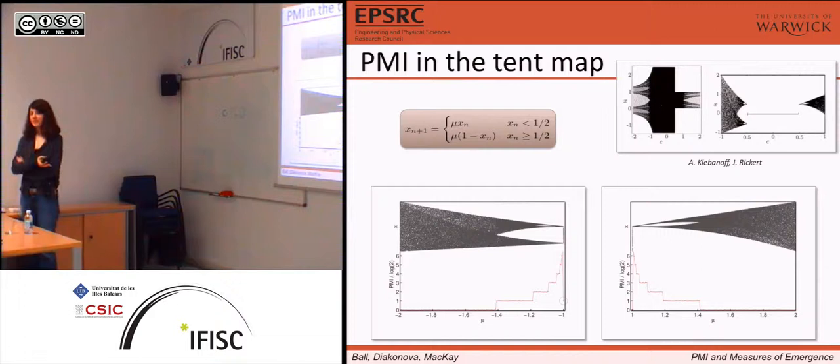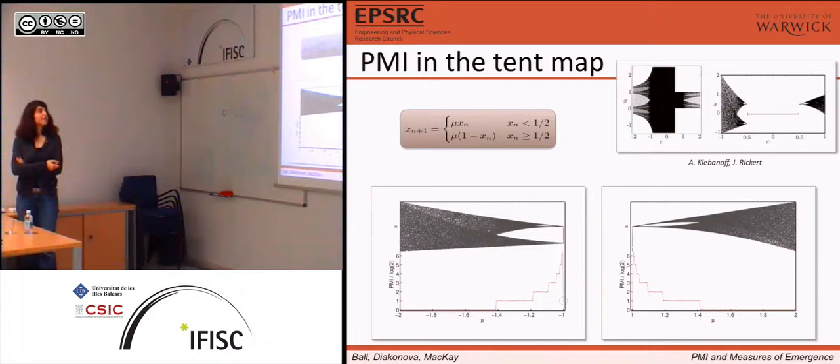We can also change the map and see what this measure gives us for the tent map. The tent map looks kind of like the logistic map but it's straight. Mu is the parameter. Here are some divergence diagrams and bifurcation diagrams, where C is half of mu.